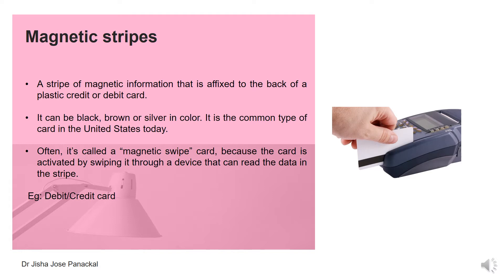Often it is called a magnetic swipe card, or we can also call it a swipe card, because the card is activated by swiping it through a device that can read the data in the stripe. So the card is swiped in a machine or device so it can identify or read the data in the stripe. We are using it in debit or credit cards.